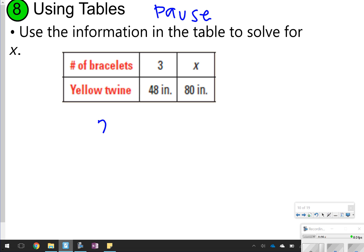Okay, so you should have set it up like this. That's 3 bracelets over 48 inches is equal to x bracelets over 80 inches. Basically, you're setting it up like it's set up in the table. We're going to cross-multiply.